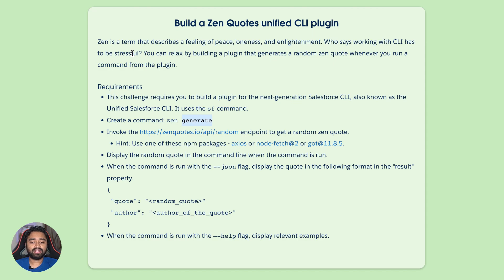The business wants you to build a plugin that generates a random Zen quote whenever you run a command from the plugin. The first requirement says this challenge requires you to build a plugin for the next-generation Salesforce CLI, also known as the unified Salesforce CLI, which uses the sf command.